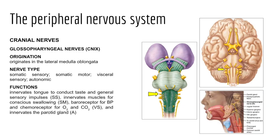Cranial nerve nine is the glossopharyngeal nerve. These fibers extend from the medulla oblongata and leave the skull via the jugular foramen, running along the throat. It has mixed function: motor fibers innervate part of the tongue and pharynx for swallowing and provide parasympathetic fibers to the parotid salivary glands. Sensory fibers conduct taste and general impulses from the pharynx and posterior third of the tongue, plus impulses from baroreceptors at the carotid sinuses and chemoreceptors of the carotid body monitoring oxygen and carbon dioxide levels.